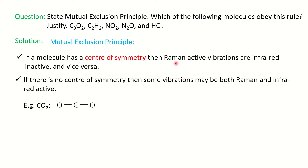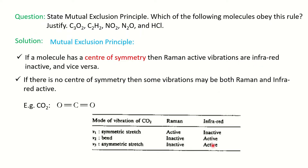Since CO2 has a center of symmetry, the first statement applies: some Raman active vibrations will be IR inactive, and IR active vibrations will be Raman inactive. For CO2, the total number of modes of vibration are three: symmetric stretching, bending, and asymmetric stretching. There are actually two bending modes, but they are degenerate, having the same energy. CO2 is a linear molecule, so using the formula 3n − 5, with n = 3 atoms, we get four modes, but the two degenerate bending modes appear as one.